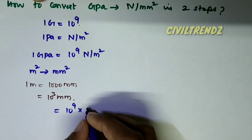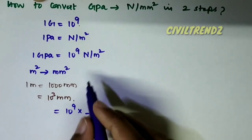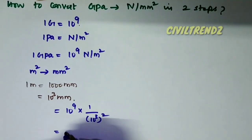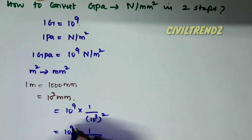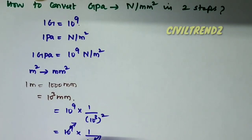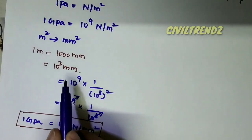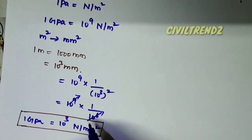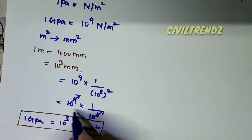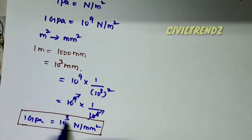10 power 9 Newton per m², and 1 meter square equals 10 power 3 whole square. So 10 power 6 — cancelling 10 power 6 from 10 power 9 — we get 10 power 3 Newton per mm². Therefore, 1 gigapascal is equal to 10 power 3 Newton per mm².